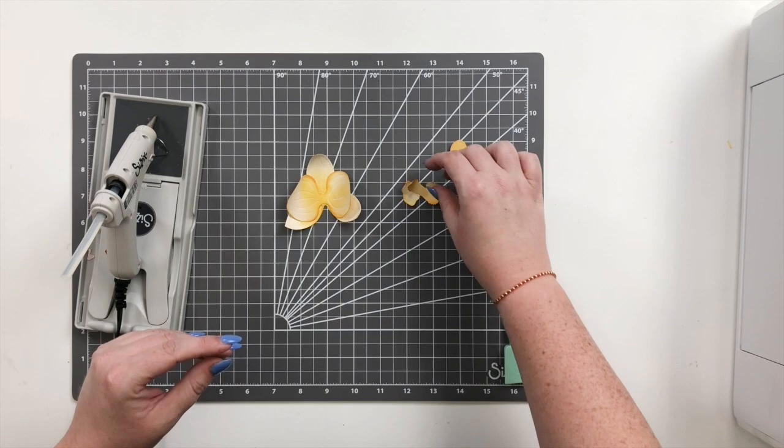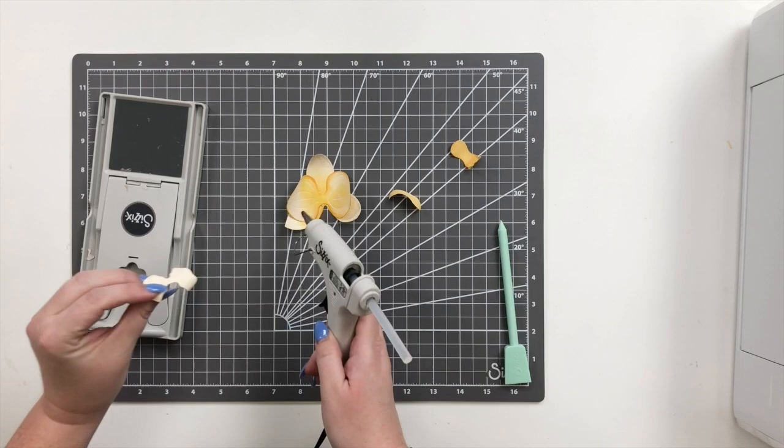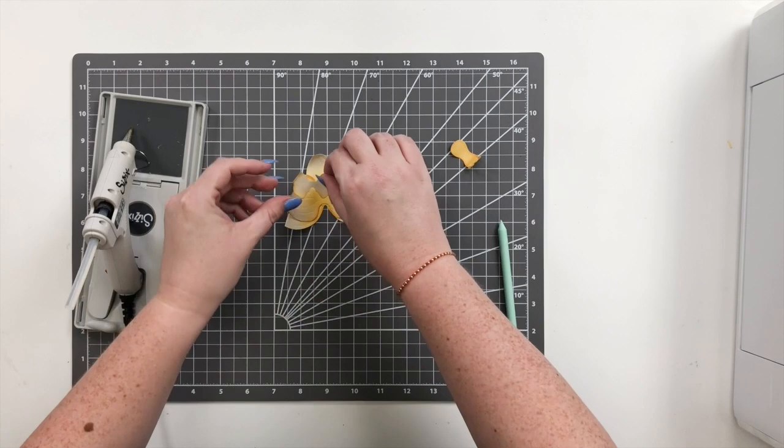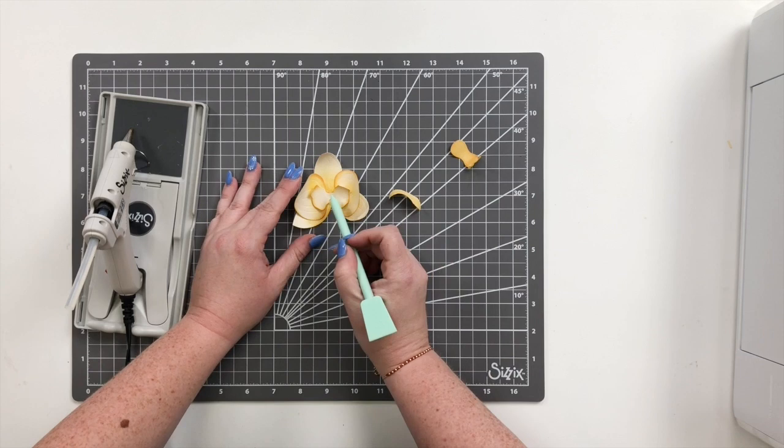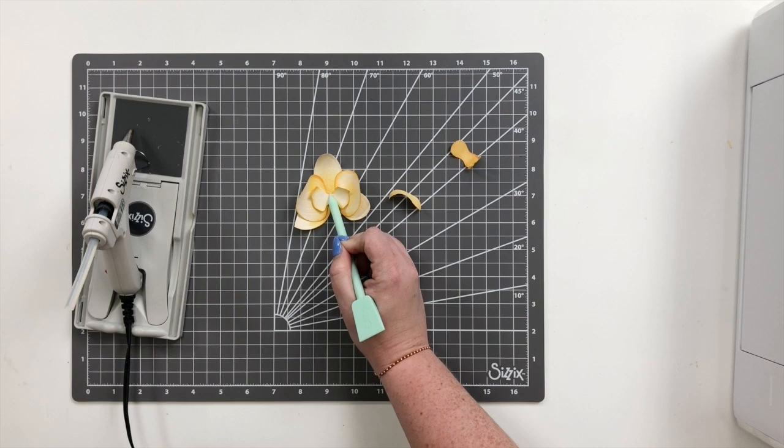Then you're going to take this two-prong piece right here, and we're going to add that right into the center. So I'm just going to put a little glue on the back of that and add that in. Okay, use my little spatula tool to hold it in place.